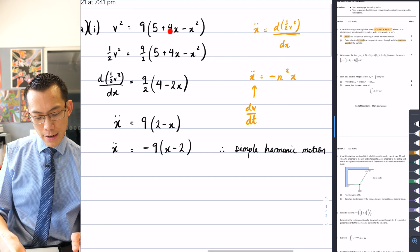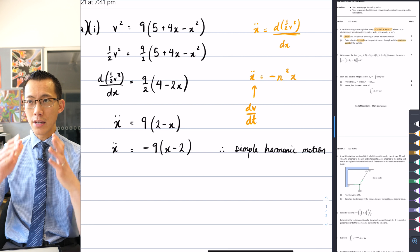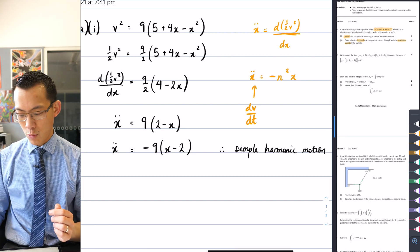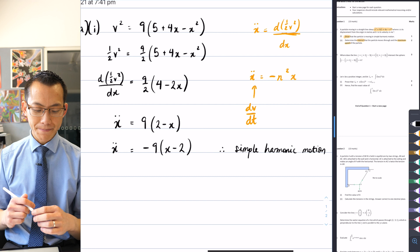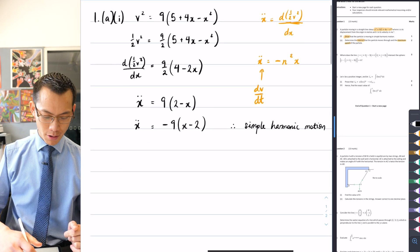Also, there were a few arithmetic errors that could creep in as you went through these lines of working. But if you had a clear path charted through the question, it generally wasn't too difficult. Okay. So that was part one. I've just shown that simple harmonic motion.